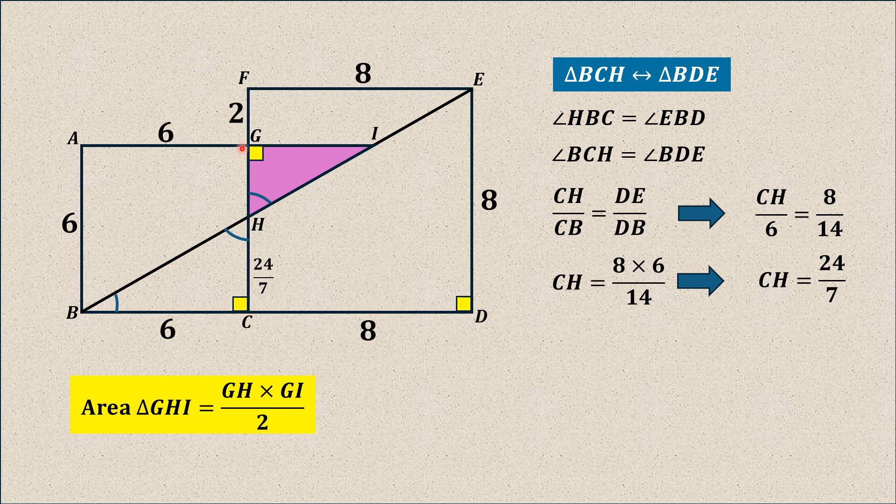And we have to find GH, this total length, which is GC, it is 6 units, subtracting this one from 6. So, GH is equal to CG minus CH, which is 6 minus 24 over 7. And thus, HG is equal to 18 over 7. Thus, this length HG is 18 over 7.